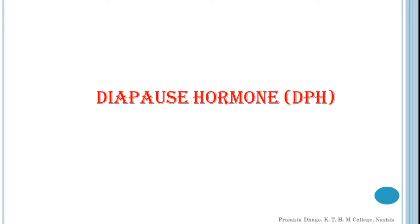Diapause hormone also enhances trehalase activity in the pupal ovaries, causing heavy accumulation of glycogen in the diapause eggs. It blocks the activity of esterase A in diapause, which carries the mobilization of yolk necessary for embryonic development in the non-diapause egg. The diapause hormone is a peptide composed of 14 amino acids and 2 amino sugars.